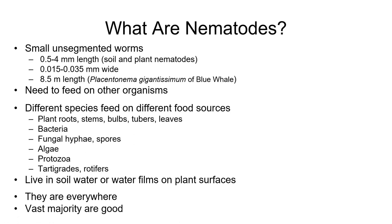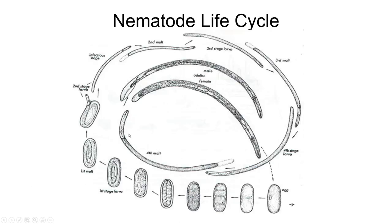Another cool thing about nematodes is that they're absolutely everywhere — in the desert, in agricultural fields, on the prairies, somewhere in Ghana, on highest mountain tops, in Antarctica. They're just everywhere. They're a very successful group of organisms. The vast majority of nematodes are exceptionally good for the soil and for plants, except for some that are detrimental to plants because of the feeding damage they cause — and that's what we're going to focus on today.